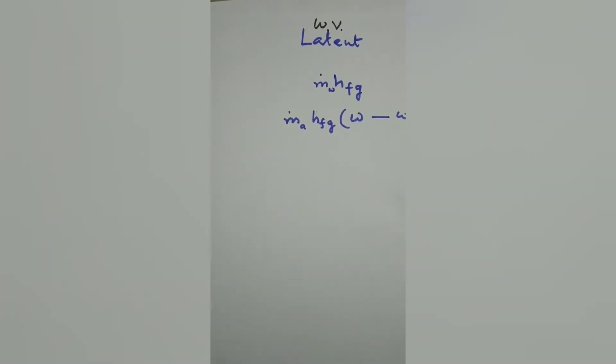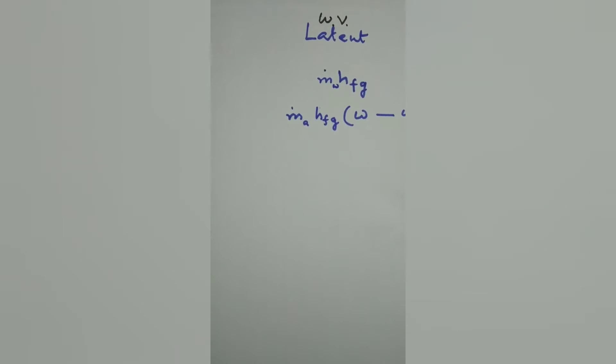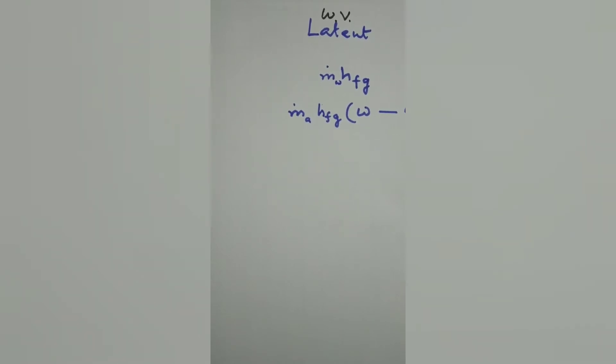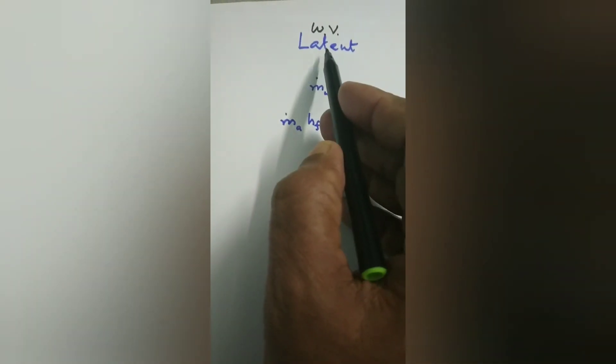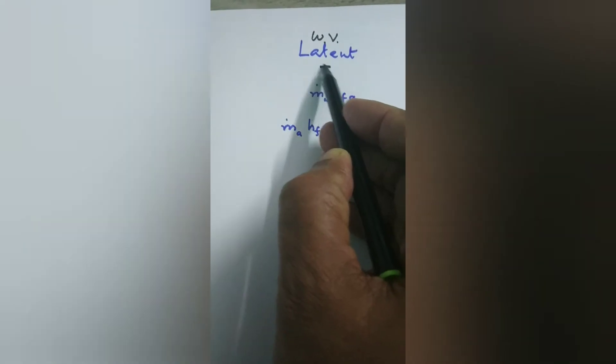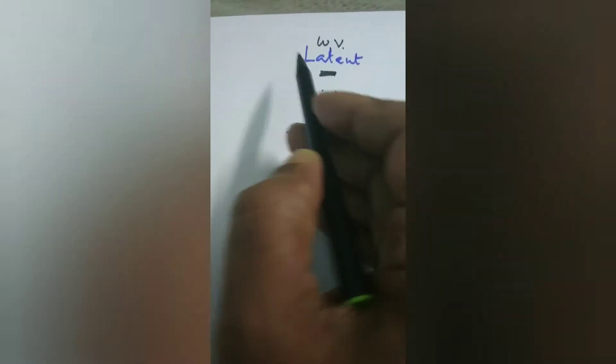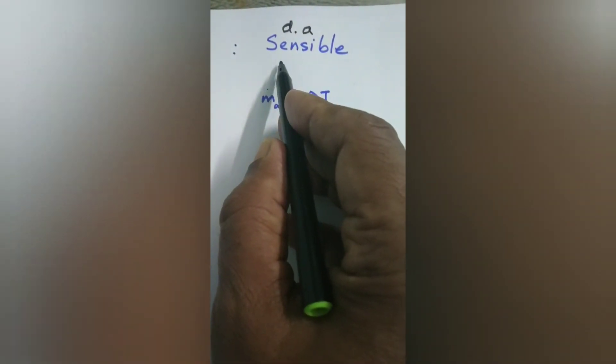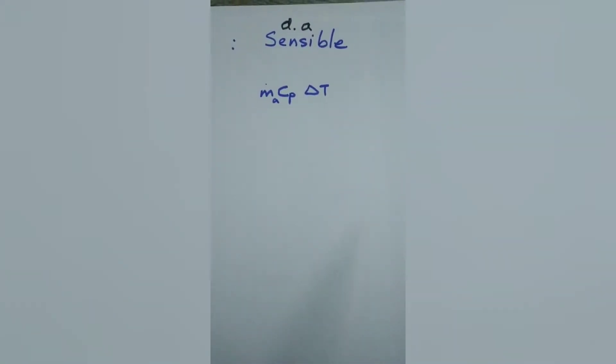Water vapor is vapor present in the air. The vapor has been made out of water, and water can only become water vapor by taking in latent heat. So if water vapor is there in the air, this means a fixed amount of latent heat is also present. If there is no water vapor in the air, then it will be just dry air.